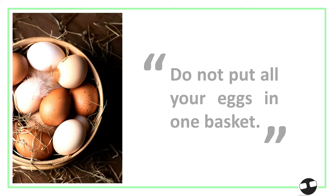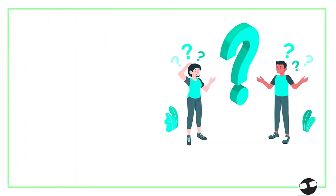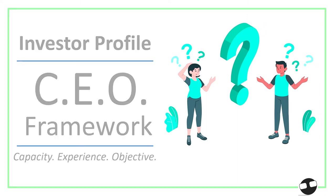So, the question is: how do we do diversification? We have to go back to investor profiling. Remember the CEO framework — Capacity, Experience, Objective. That framework will give you the guide on how to do the diversification process.